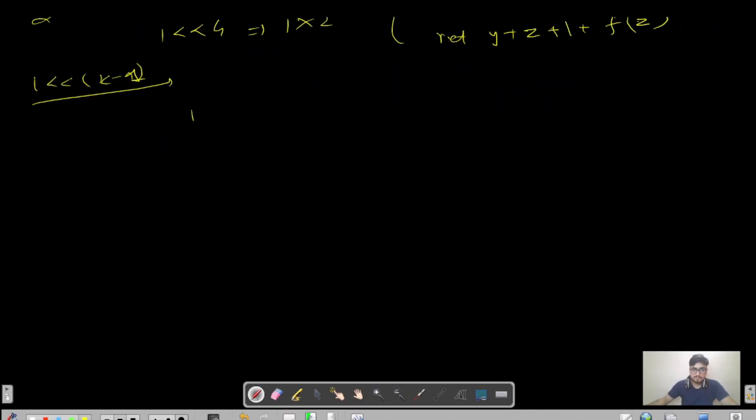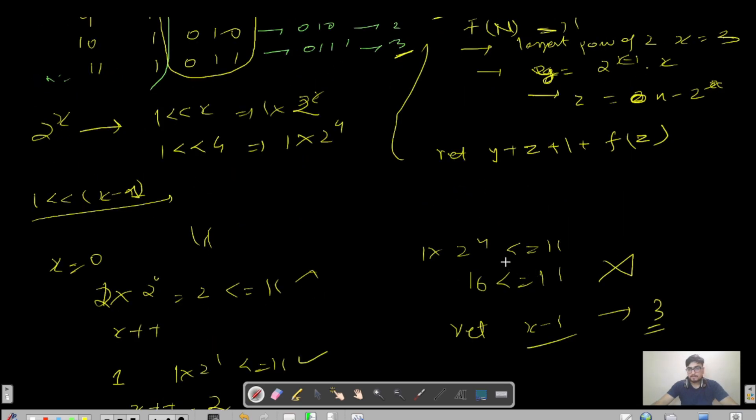How do we calculate largest power of 2? For each x, let's say for 11, we check x equals 0, then 1 left shift x. We check if 1 times 2 power 0 is less than or equal to 11. Then x plus plus to 1, checking 2 power 1 less than or equal to 11. We continue: x becomes 2, checking 2 power 2, then x becomes 3, checking 2 power 3. Finally, x becomes 4 and we check 1 times 2 power 4 which is 16, not less than or equal to 11. It violates the condition, so we return x minus 1, which is 3. I hope you're getting the point.